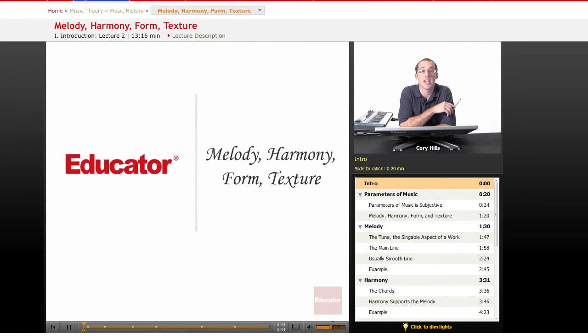Hello and welcome back to Music History at Educator.com, our second overall lesson. Today we are starting work on the first four parameters of music that I briefly mentioned in the first lesson, and that'll be melody, harmony, form, and texture.